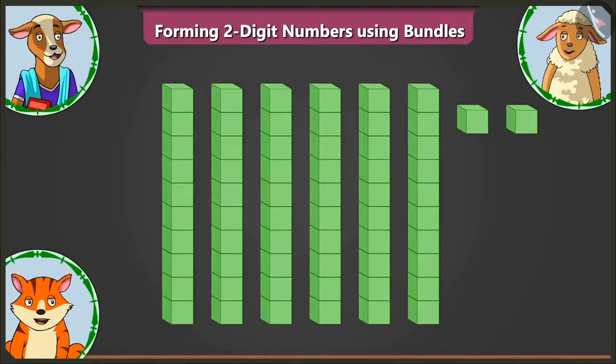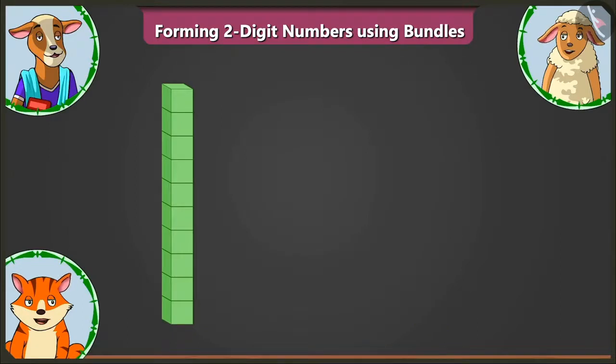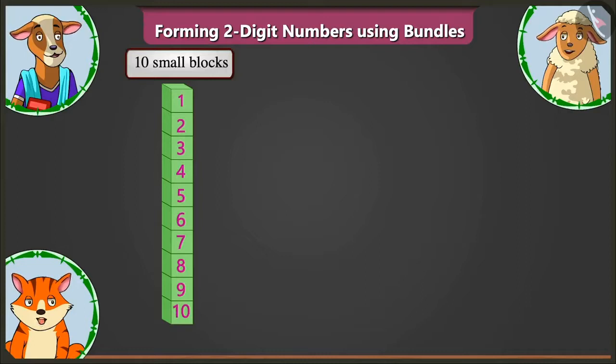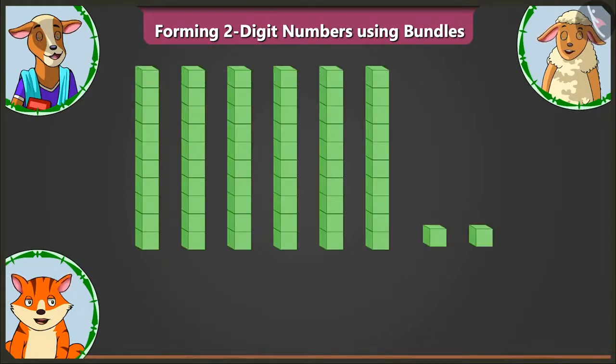Now, tell me, what number do all these blocks represent? Here, in the first big block, there are one, two, three, four, five, six, seven, eight, nine and ten small blocks. This means there is one tens. Well done, Billy.